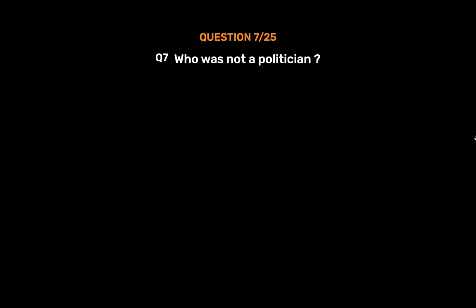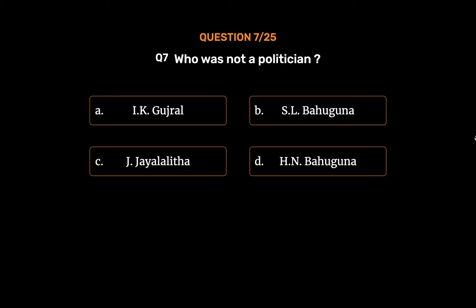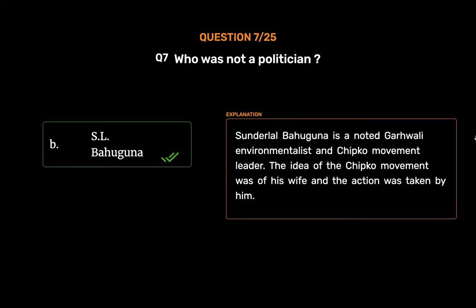Question No. 7. Who was not a politician? Option A. I.K. Gujral. Option B. S.L. Bahuguna. Option C. J.J. Lalita. Option D. H.N. Bahuguna. The correct answer is Option B, S.L. Bahuguna. Sundarlal Bahuguna is a noted Gharwali environmentalist and Chipko movement leader. The idea of the Chipko movement was of his wife and the action was taken by him.